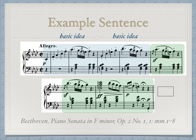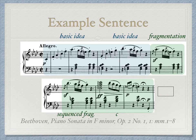In the first measure of the continuation, the sixteenth note triplet figure is fragmented from the original basic idea. In the first measure of the second system, we see the fragmentation has moved up a major second in a sequenced fragment. The harmonic rhythm speeds up to the final two measures, and our cadential progression finishes out the theme with a half cadence.